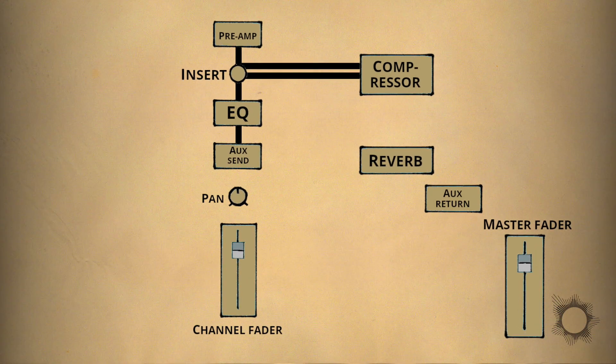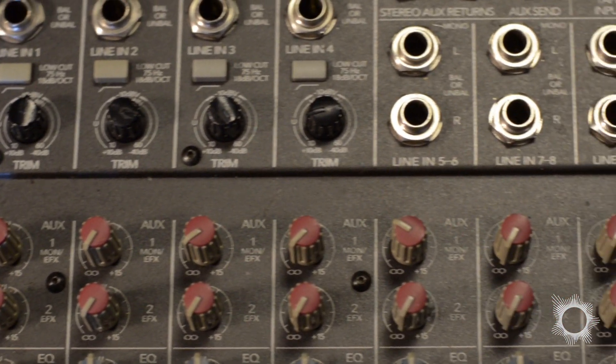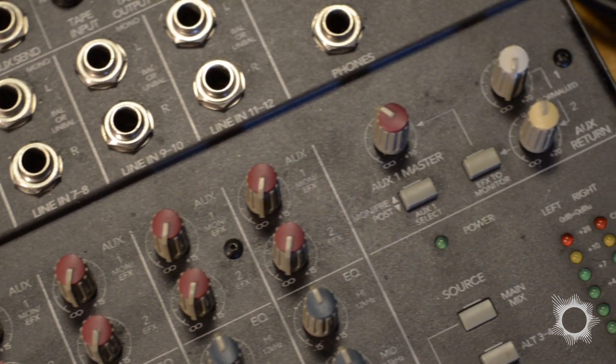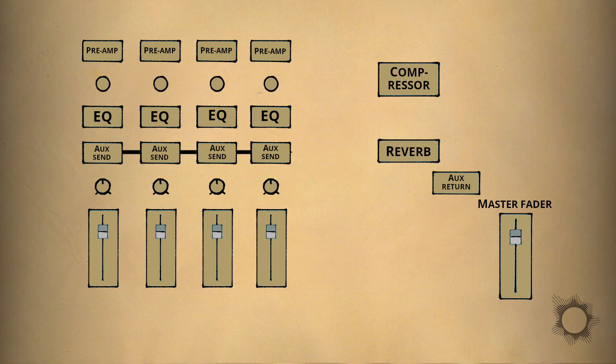Let's go back to the aux sends. Each channel has its own send control and together they can be thought of as a mini mixer within the larger one. It's also referred to as a bus. You can therefore send many signals at the same time to an effect and control how much of each one is sent there.